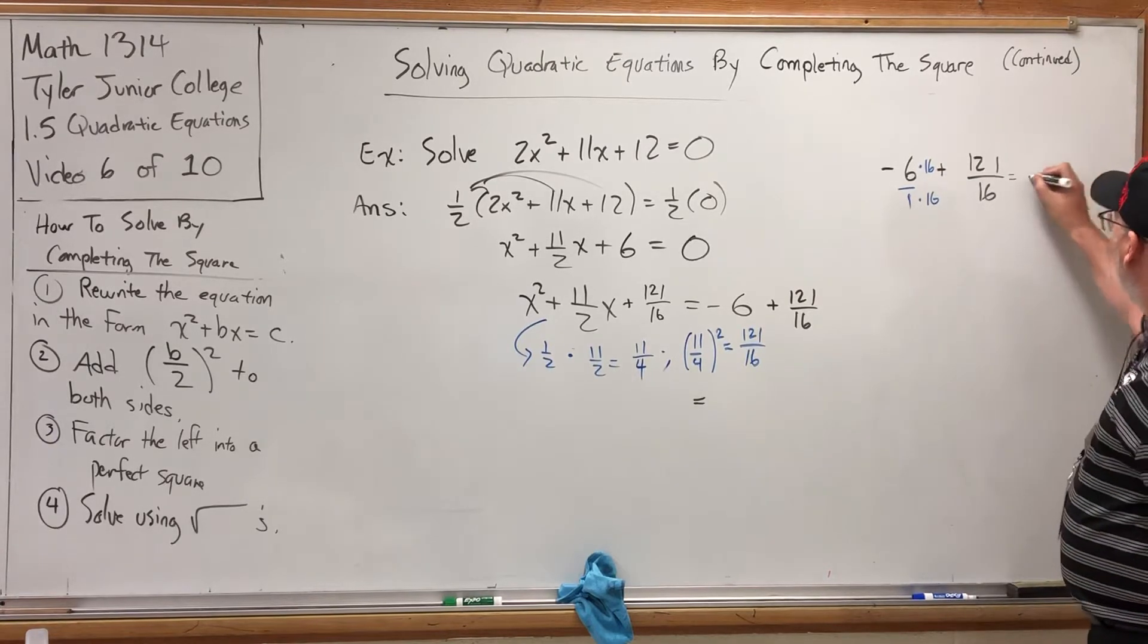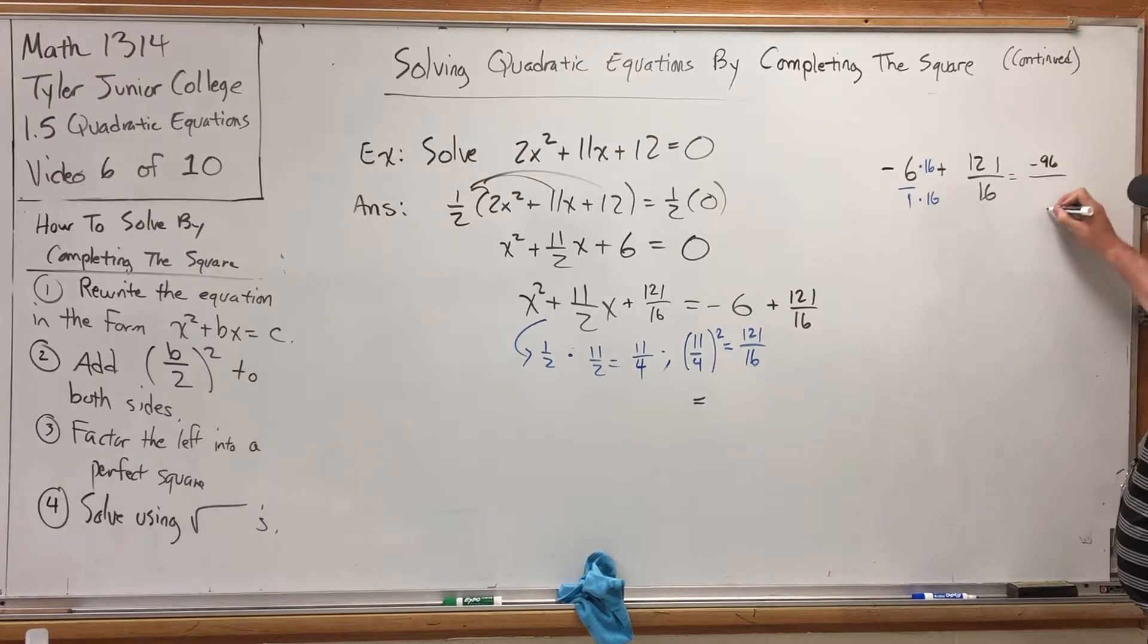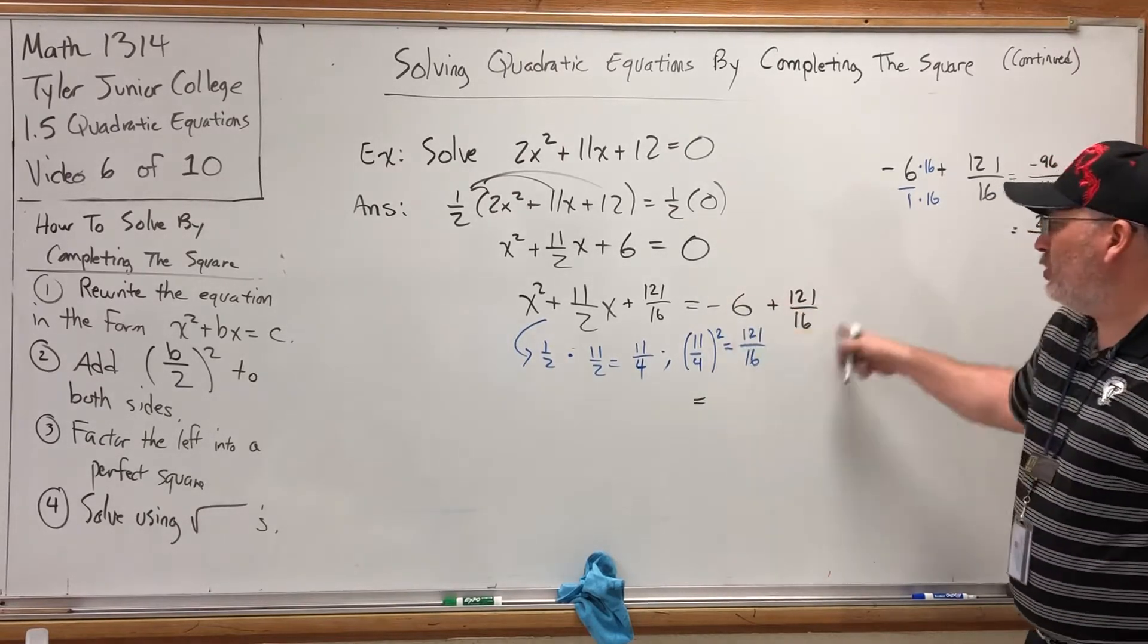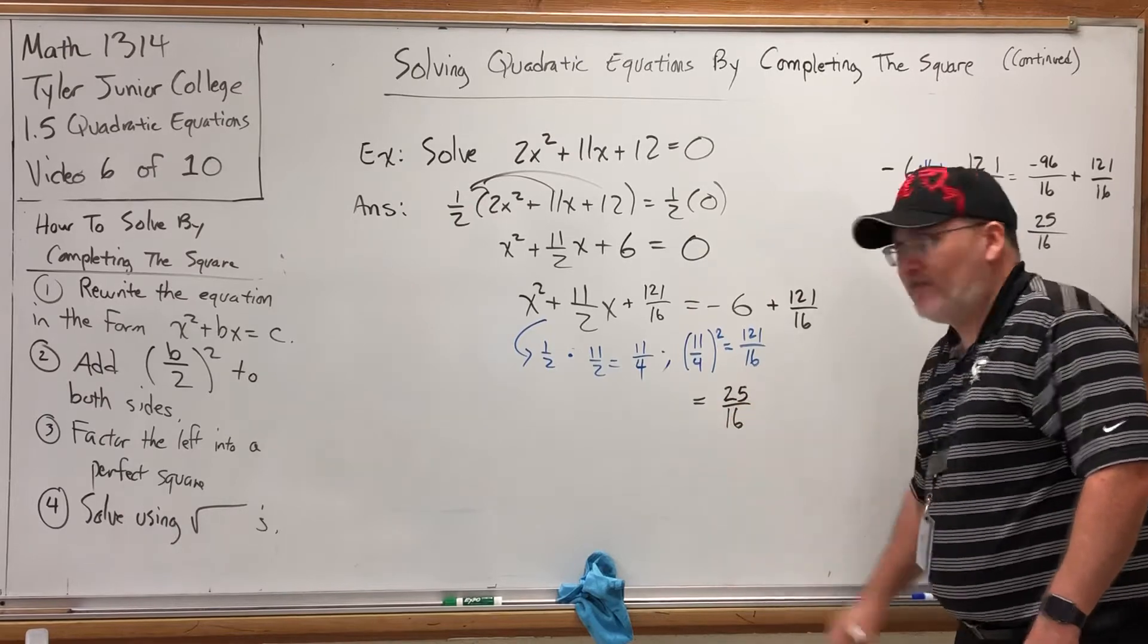So what does that give us? Well, negative 6 times 16 is negative 96 on top of 16. And then we have 121 on top of 16. So if we add those, we keep the common denominator. Negative 96 plus 121 is 25. So combining the like terms on the right side gives us 25 over 16, which is actually a great fraction to have there.